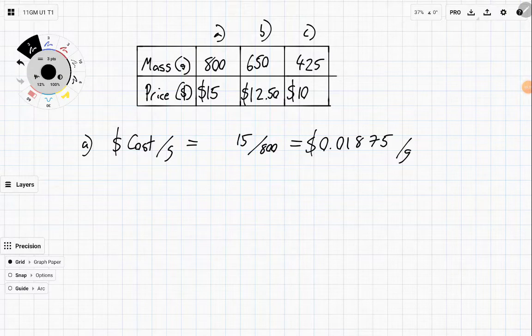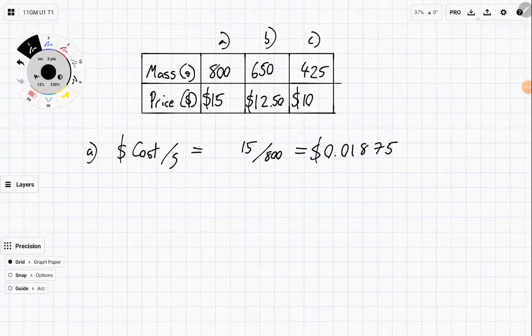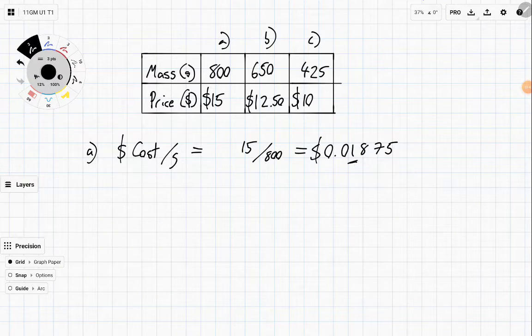Instead, what we might want to write this as is in cents instead. At this point, I'm going to leave a few extra decimals this time, just because I don't know how the others are going to round just yet, because they're rounding to quite small amounts, like that's two cents per gram if we rounded it. But anyway, let's have a look at the second one.